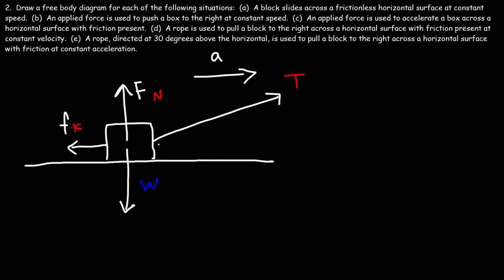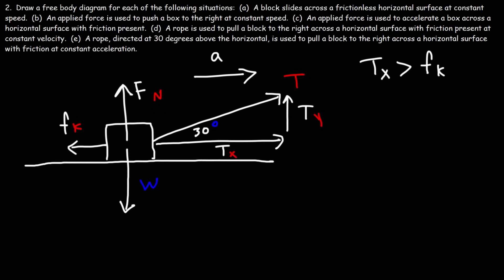That tension force has an x component, Tx, and a y component, Ty. It's directed at an angle of 30 degrees above the horizontal. In order to accelerate the block to the right, Tx has to be greater than fk. In other problems the normal force was equal to mg, but that's not the case here because of the y component of T. The block is not accelerating upward or downward, so the net force in the y direction is zero.